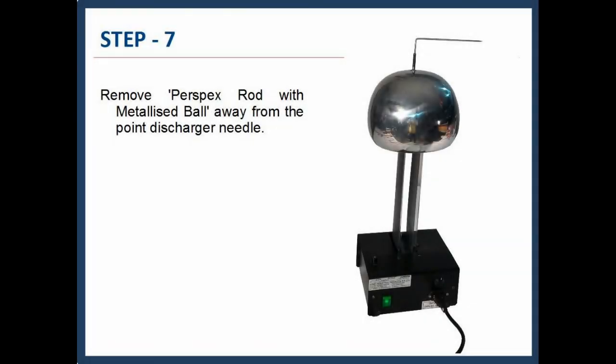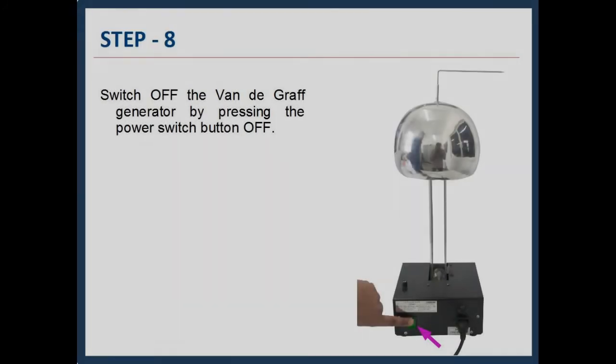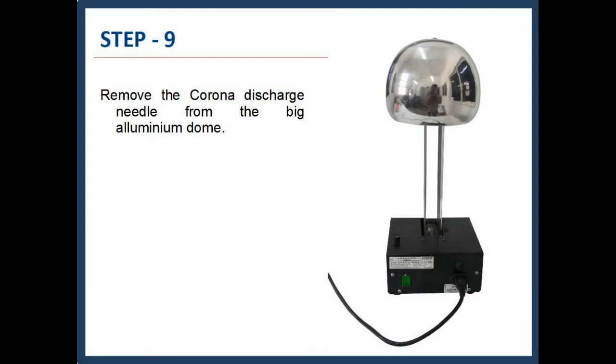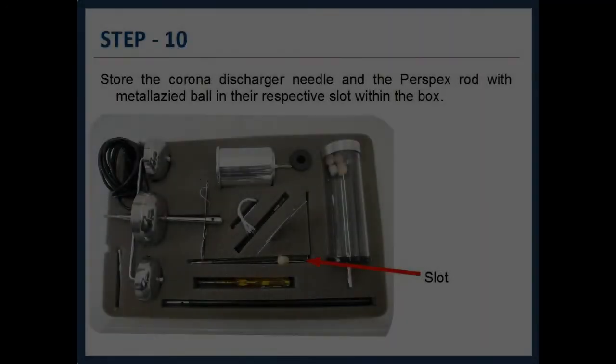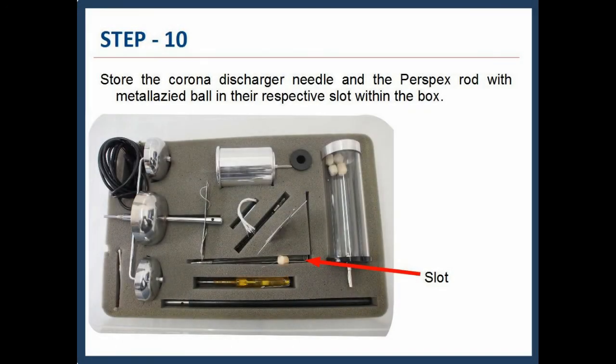Step 27: Remove Perspex rod with metallized ball away from the point discharger needle. Step 28: Switch off the Van de Graaff generator by pressing the power switch button off. Step 29: Remove the corona discharge needle from the big aluminum dome. Step 30: Store the corona discharger needle and the Perspex rod with metallized ball in their respective slot within the box.